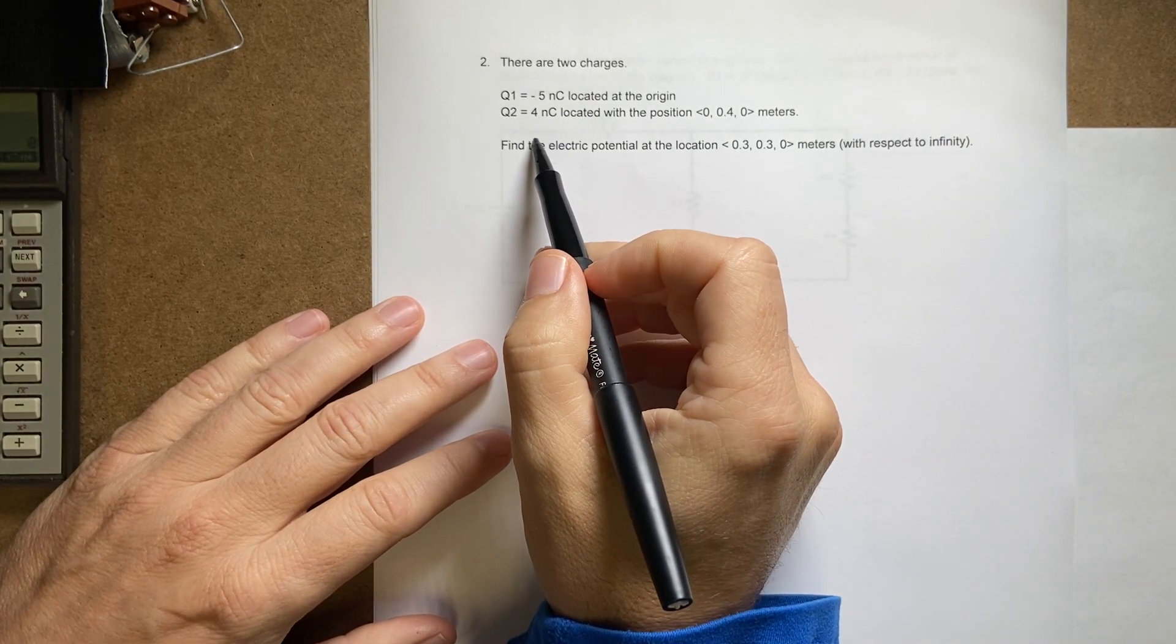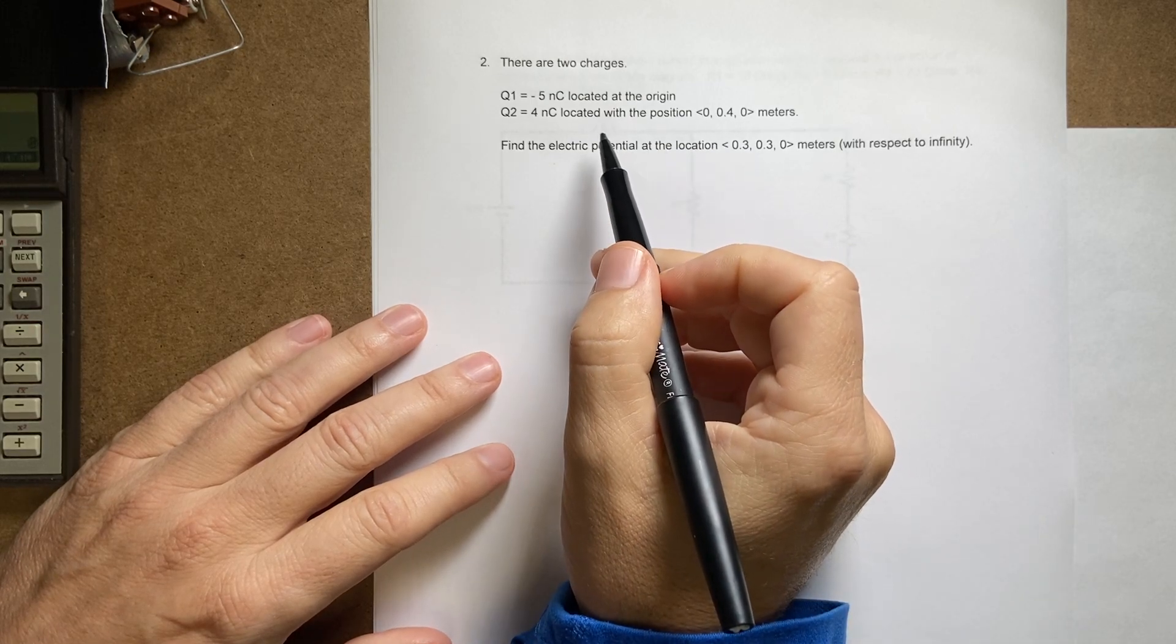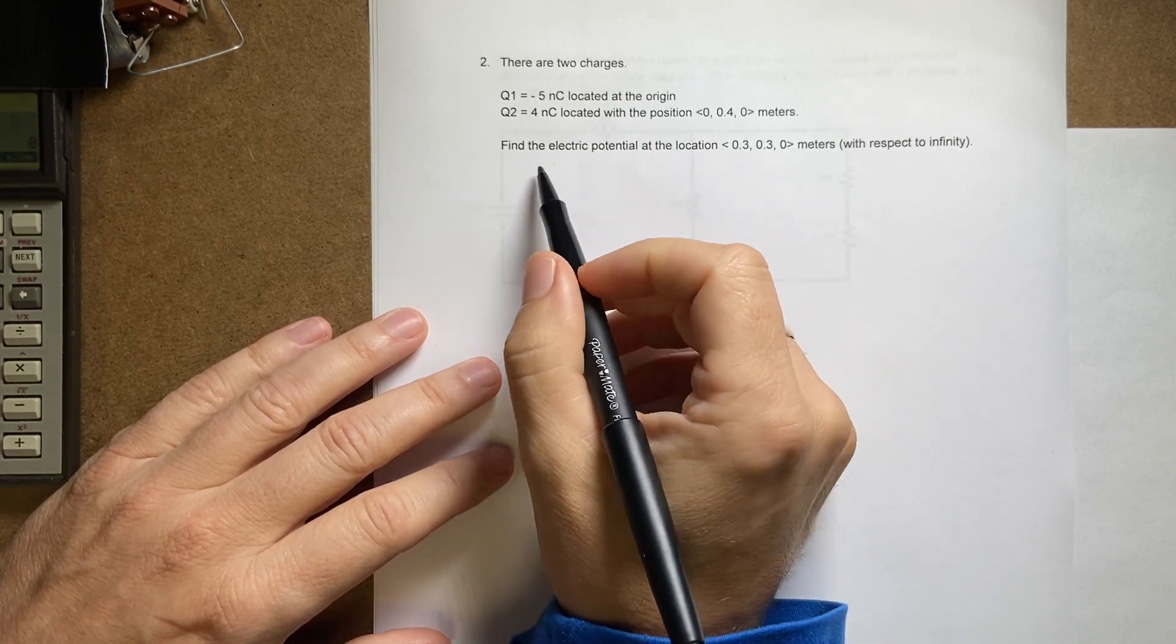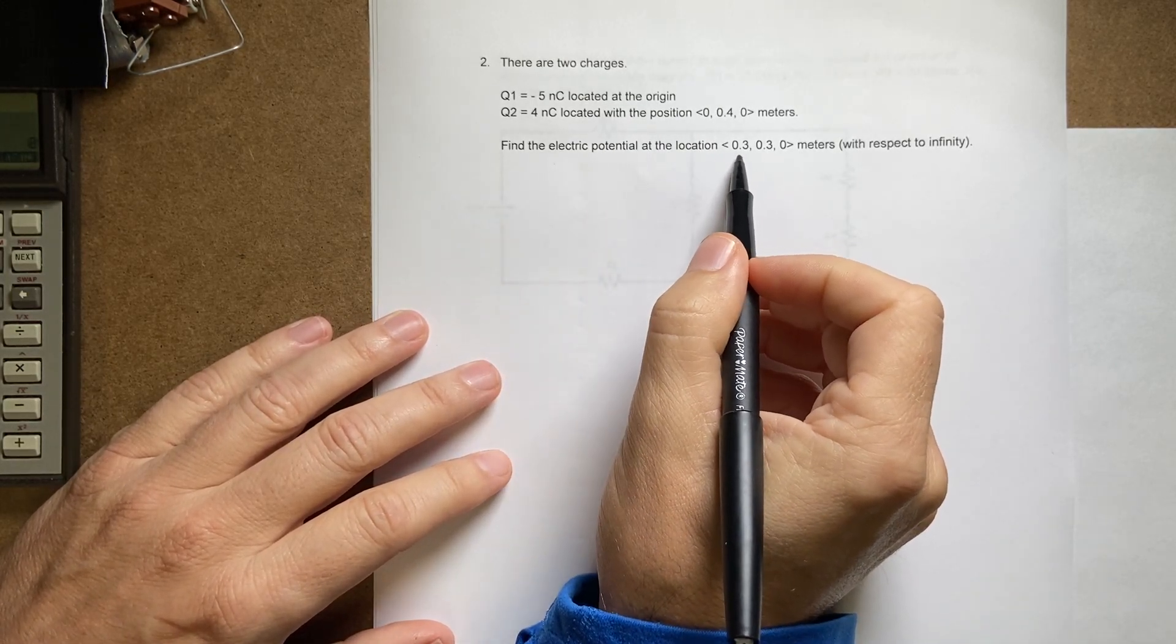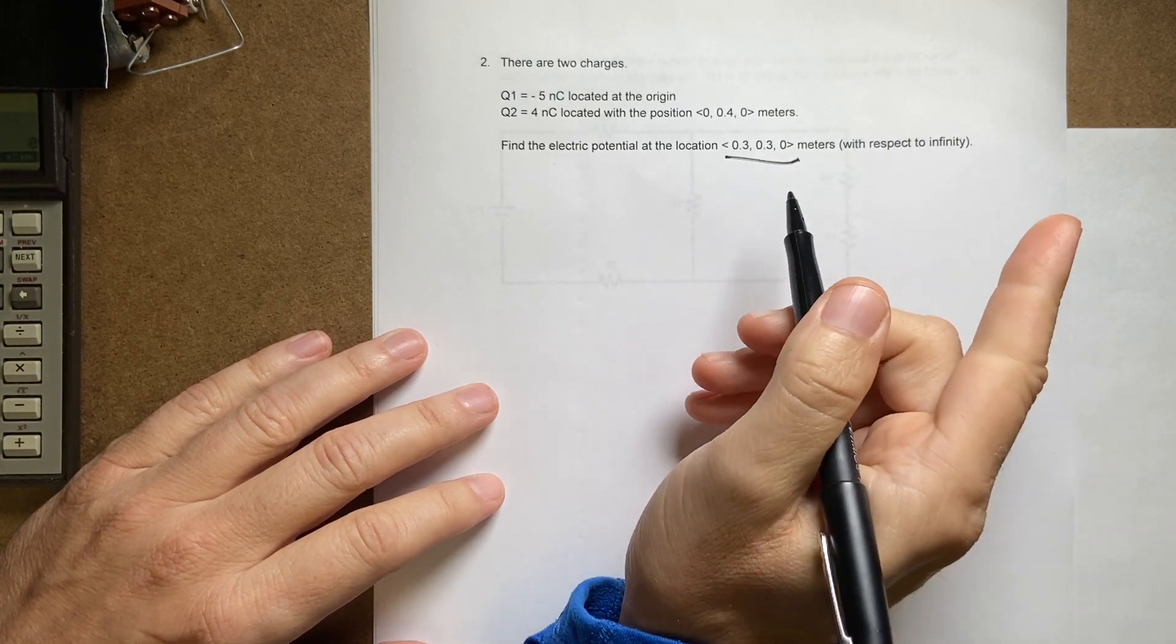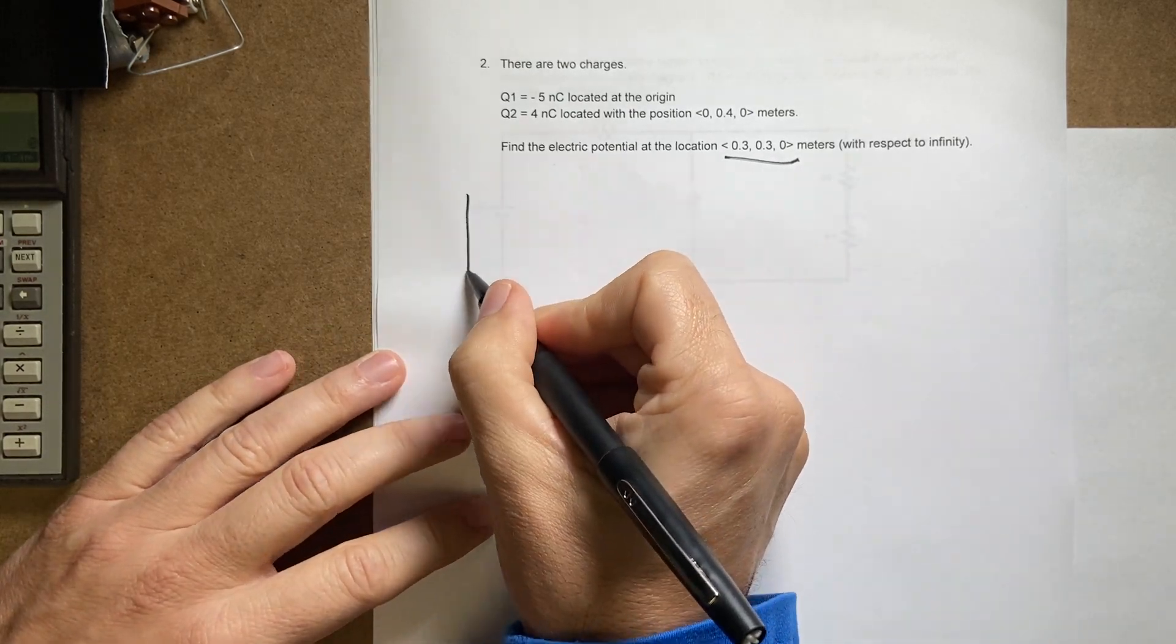Two charges, they're actually the same charges in the same location as in the previous problem, problem number one. The question says find the electric potential at this location, which is a different location with respect to infinity. So let's draw the picture.